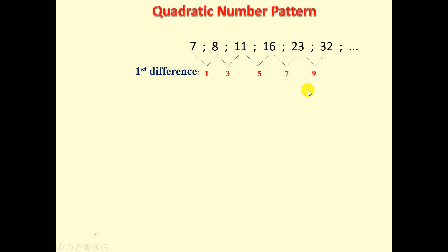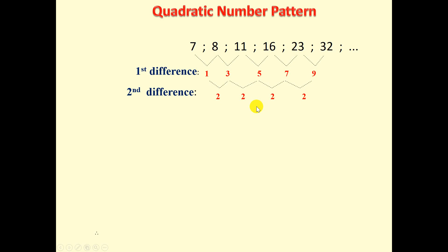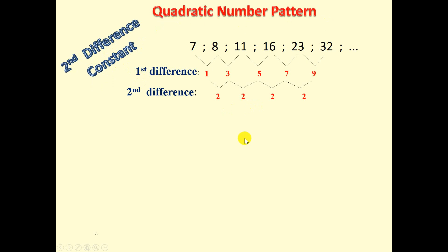You'll notice that the first difference is not common, so we're going to go on to find the second difference. 3 minus 1 is 2, 5 minus 3 is 2, 7 minus 5 is 2, 9 minus 7 is 2. You will notice that the second difference is common and constant, so we can conclude that this is a quadratic number pattern.